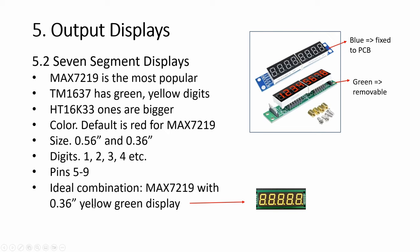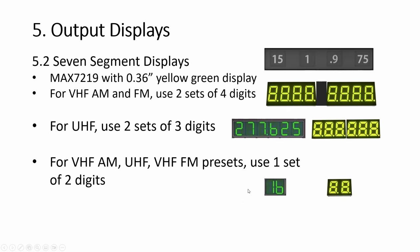You need to get the seven segments of the right dimension, like 0.36 inch size. Sometimes you can mix and match — on the A-10, the VHF AM and FM require two sets of four digits with a blank in the middle for the third digit. UHF uses two sets of three digits to get six digits, and presets can use just a two-digit display. Just choose the right combination.